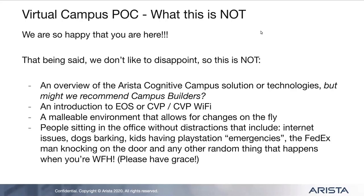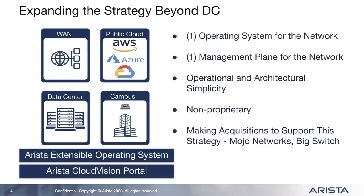Why is Arista getting into campus? We got our start in the data center, but now we're expanding into campus, public cloud, and tap aggregation. The reason is that EOS is so extensible — with the same operating system and management suite, we can operate across different parts of your network. There's a lot of overlap between how we handle campus and data center, without needing different control planes or separate management suites for different business units.